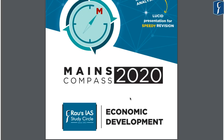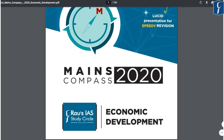Go through the Mains Compass 2020 of Rao's IES Study Circle on the topic of economic development, as it provides section-wise detailed analysis of important topics which can be asked in your upcoming Mains examination 2021, to be held in January.